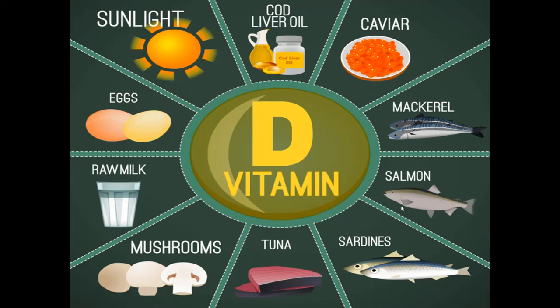Vitamin D: sunlight helps us synthesize vitamin D naturally in our body, so sunlight is a natural source of vitamin D. Other sources include cod liver oil, caviar, mackerel, salmon, sardines, tuna, mushroom, raw milk and egg. These are some of the food items that are rich in vitamin D along with natural sunlight.